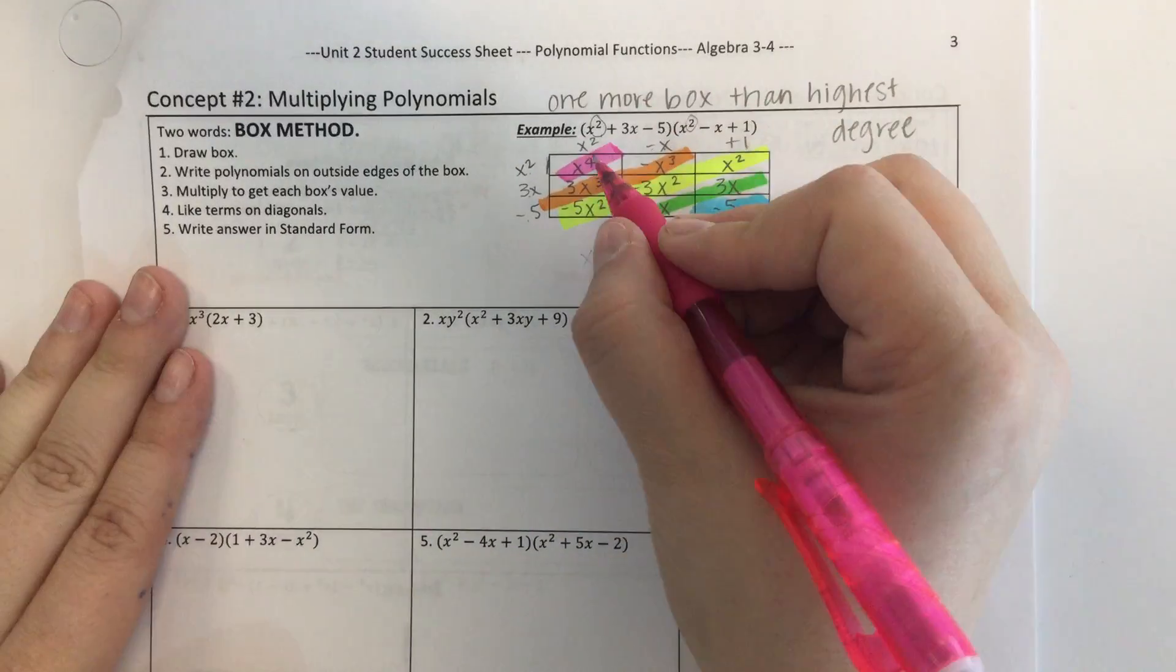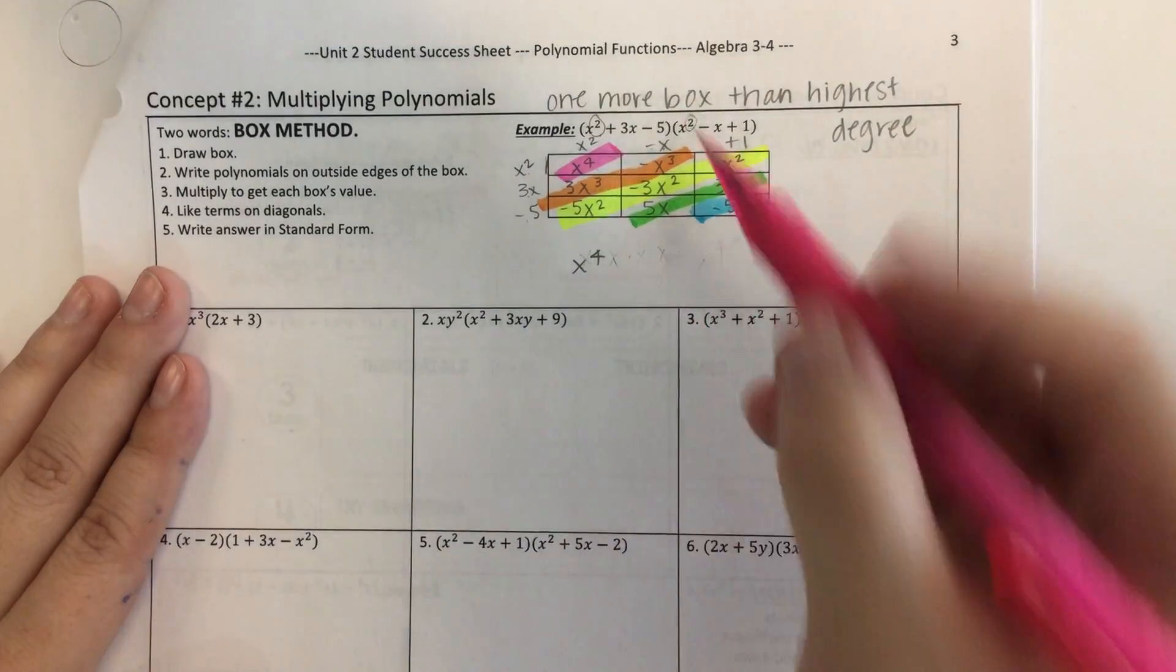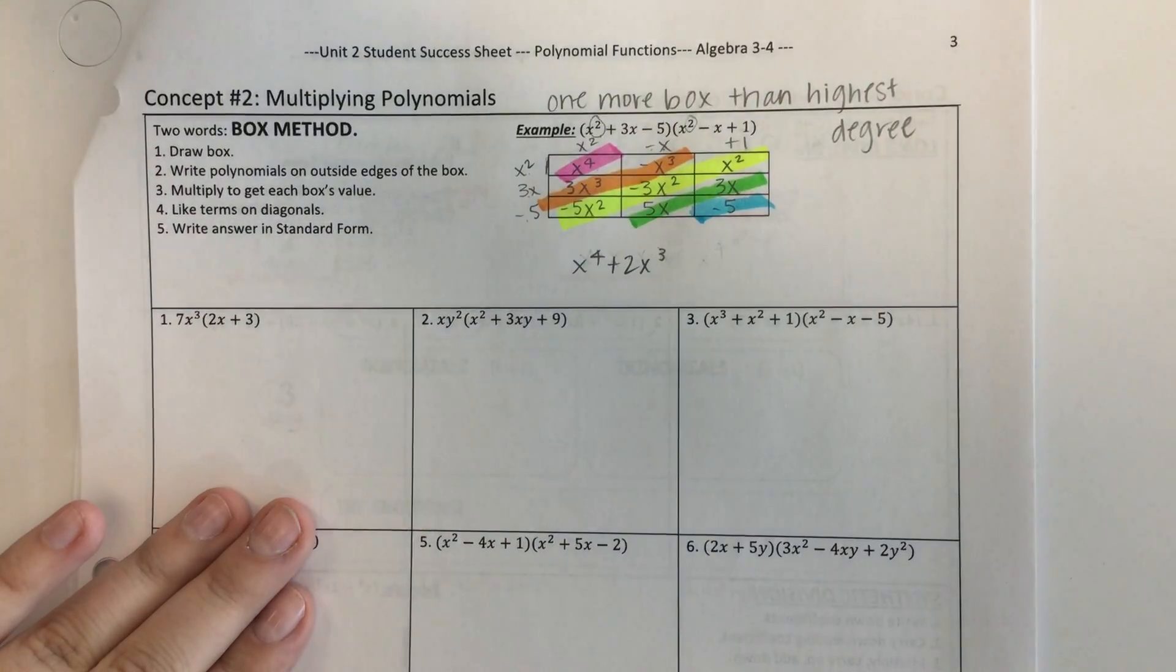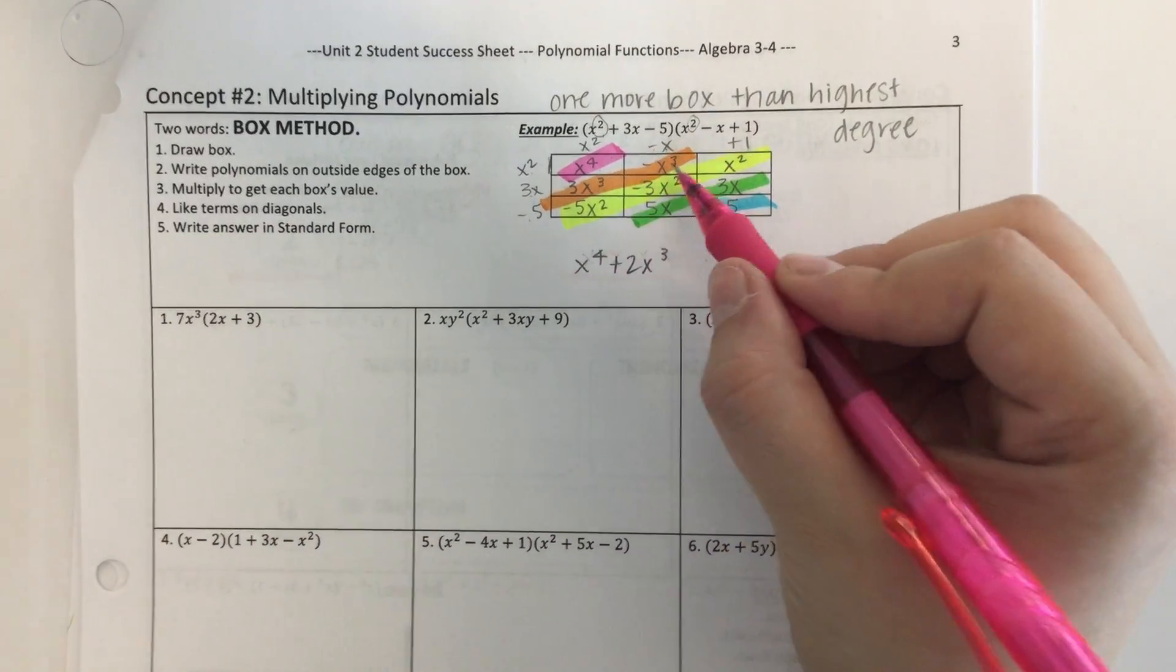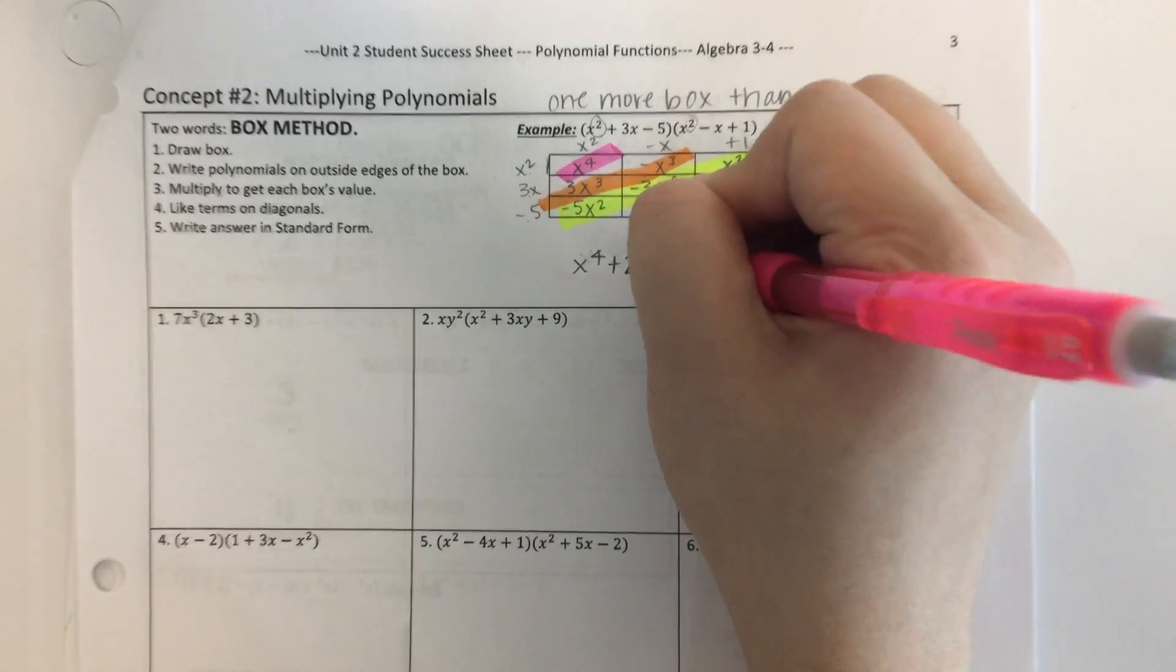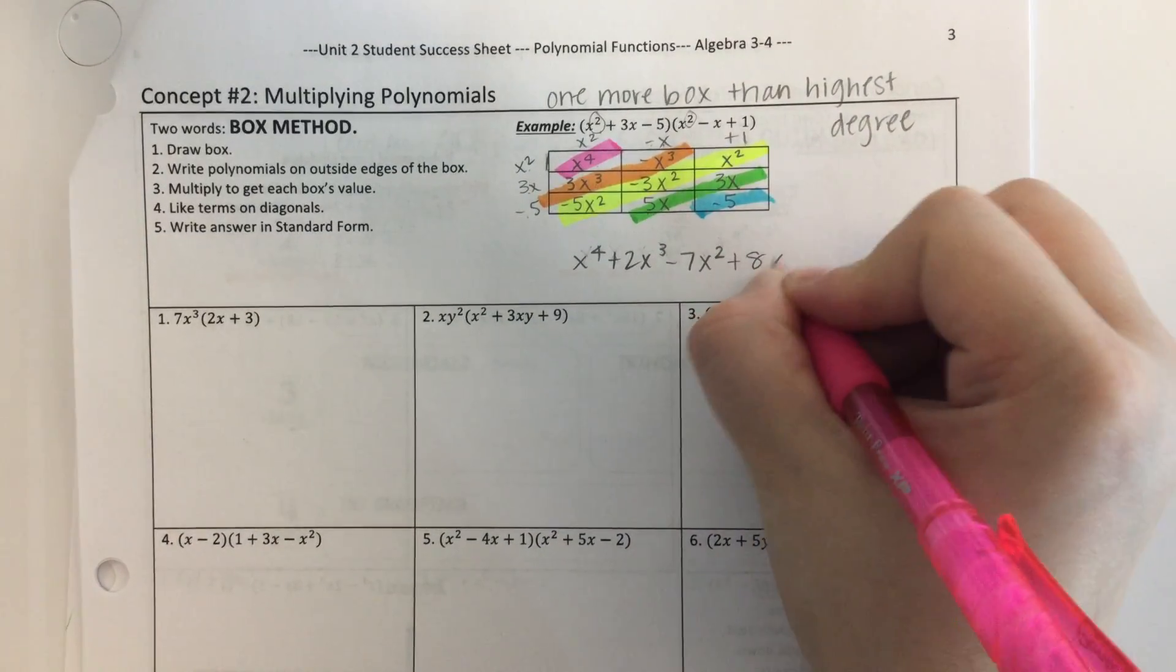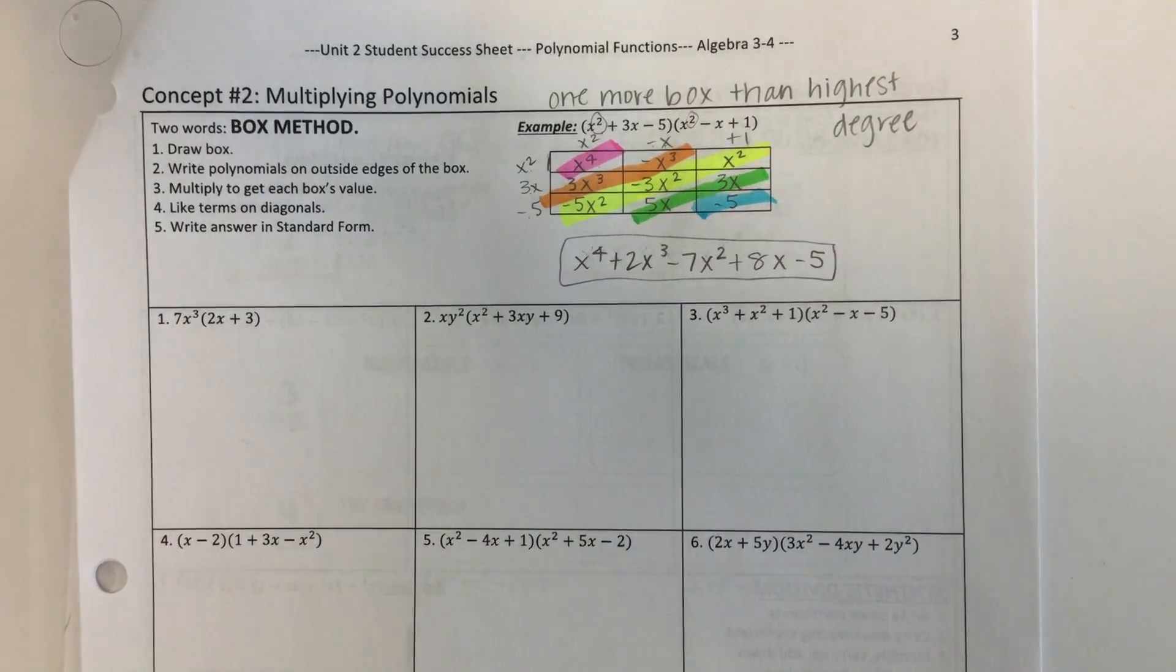You need to combine your like terms on the diagonals and then write it in standard form. Since x fourth is by himself when he's the highest one, I'm going to write him first. 3x cubed minus x cubed gives me 2x cubed. Negative 5 and negative 3 make negative 8, but I add 1. So that's negative 7x squared. 5 and 3 make 8x and then minus 5. And that is my answer.